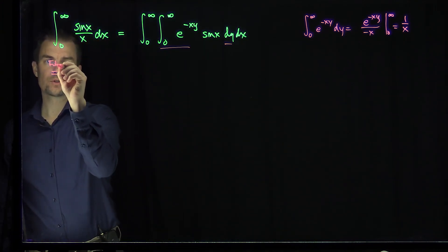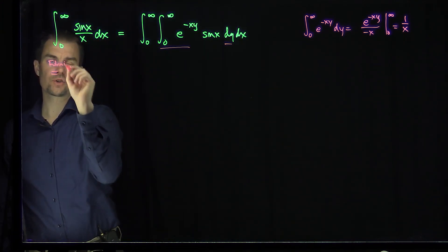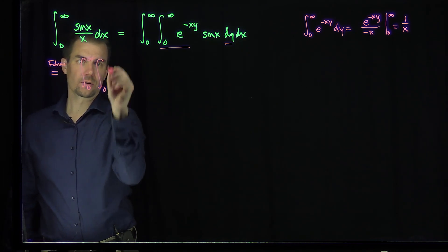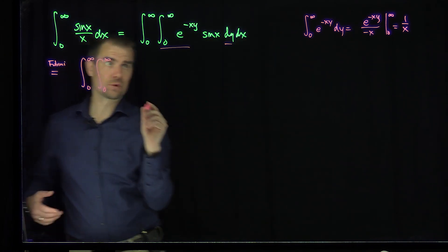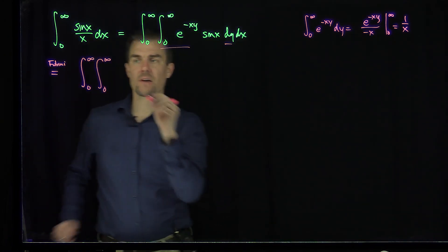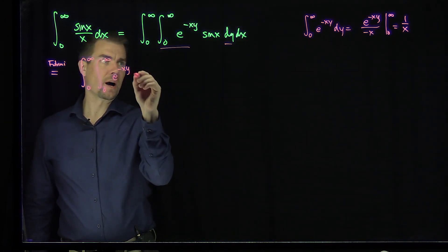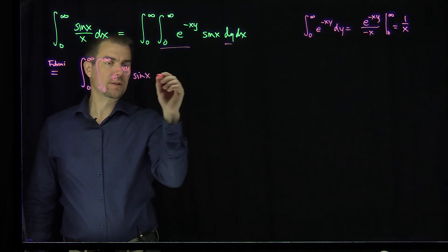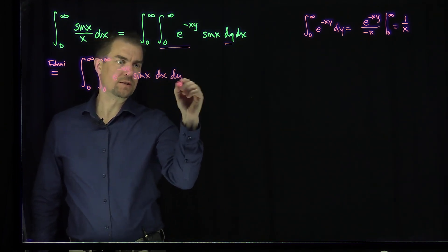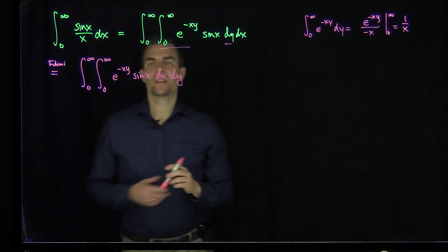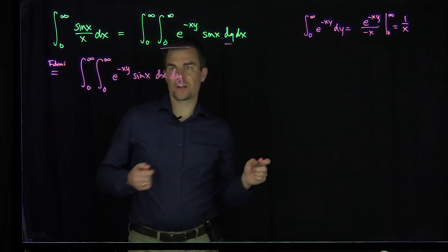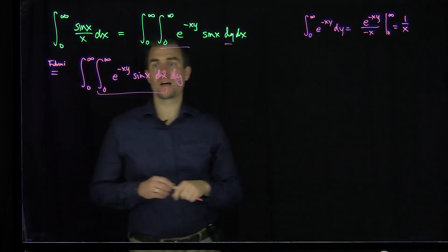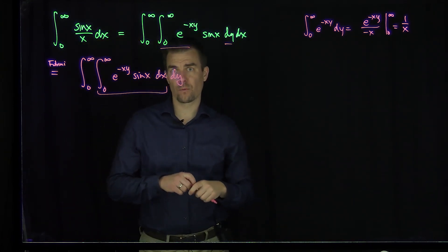By Fubini, we can change the limits of integration to the integral from zero to infinity, integral from zero to infinity — the limits don't change — but now we have e to the negative xy sine of x dx dy. Now this inner integral can be evaluated as a function of y.